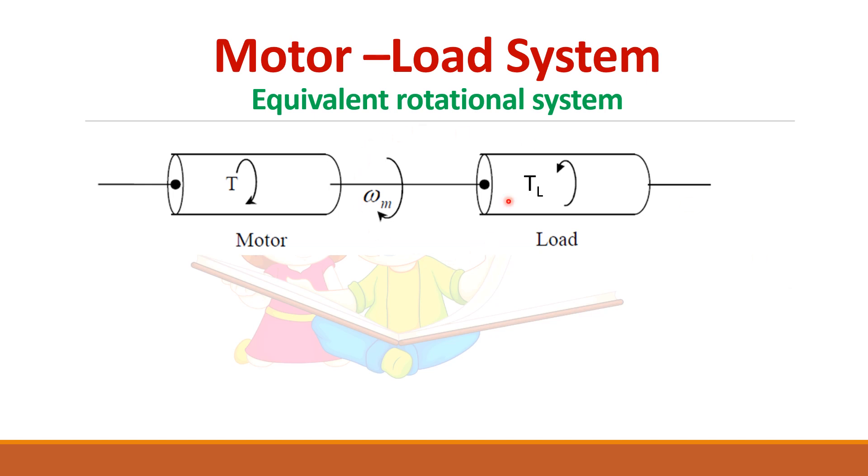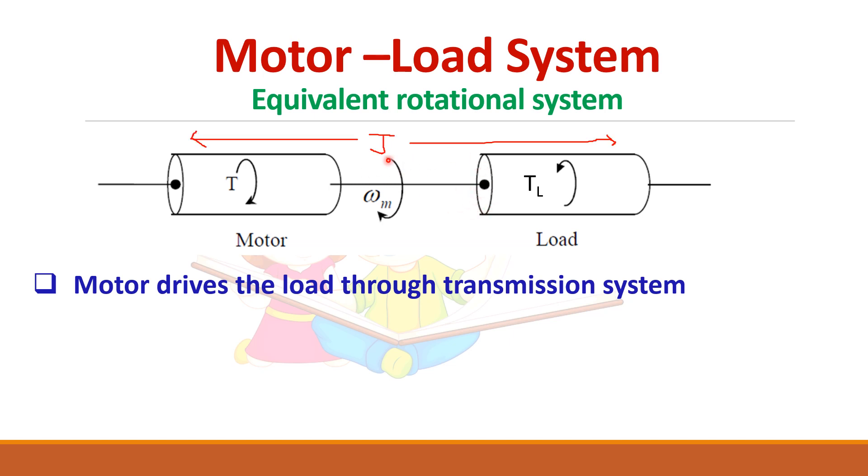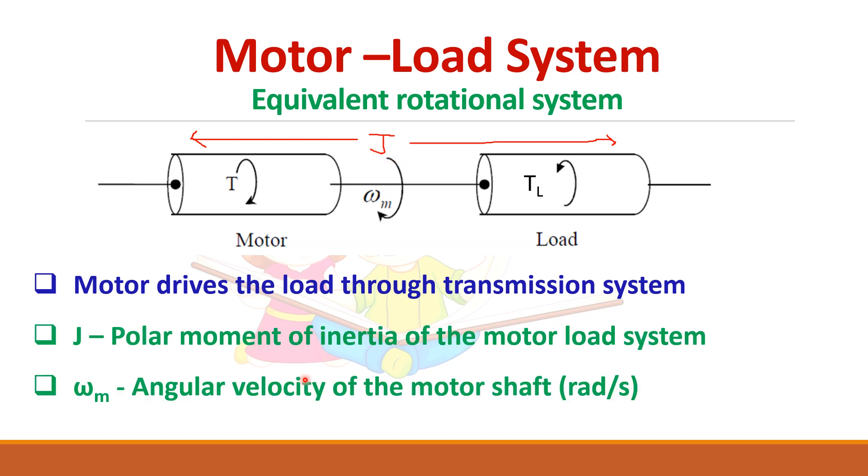Let us consider the rotational motion of the load. So the motor drives the load through shaft. Normally a shaft will be connected or any other transmission system will be there. Here you have to take the inertia of both the system. The inertia will be represented by the letter J, and this ωm is the velocity of the motor shaft.